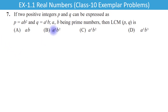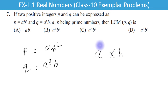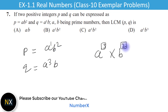Jab LCM nikalenge to highest exponent lete hain. Is question ke liye P = AB squared aur Q = AB. A aur B prime numbers hain. A aur B ko multiply karke likhiye — A ka highest exponent 3 aur B ka highest exponent 2. So LCM = A cubed times B squared, jo option C mein given hai. So C is the right answer.